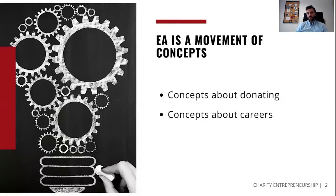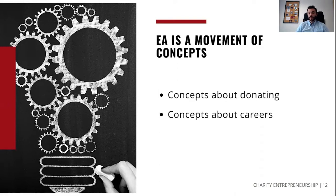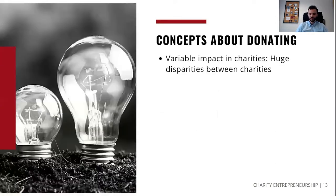In general, the effective altruism movement is a movement of concepts. We're going to go over two broad areas: concepts about donating and the charitable sector, and then concepts about career. You can think of these as the two inputs you can use to make the world a better place — you can put your time or your money, or both, into making the world a better place.